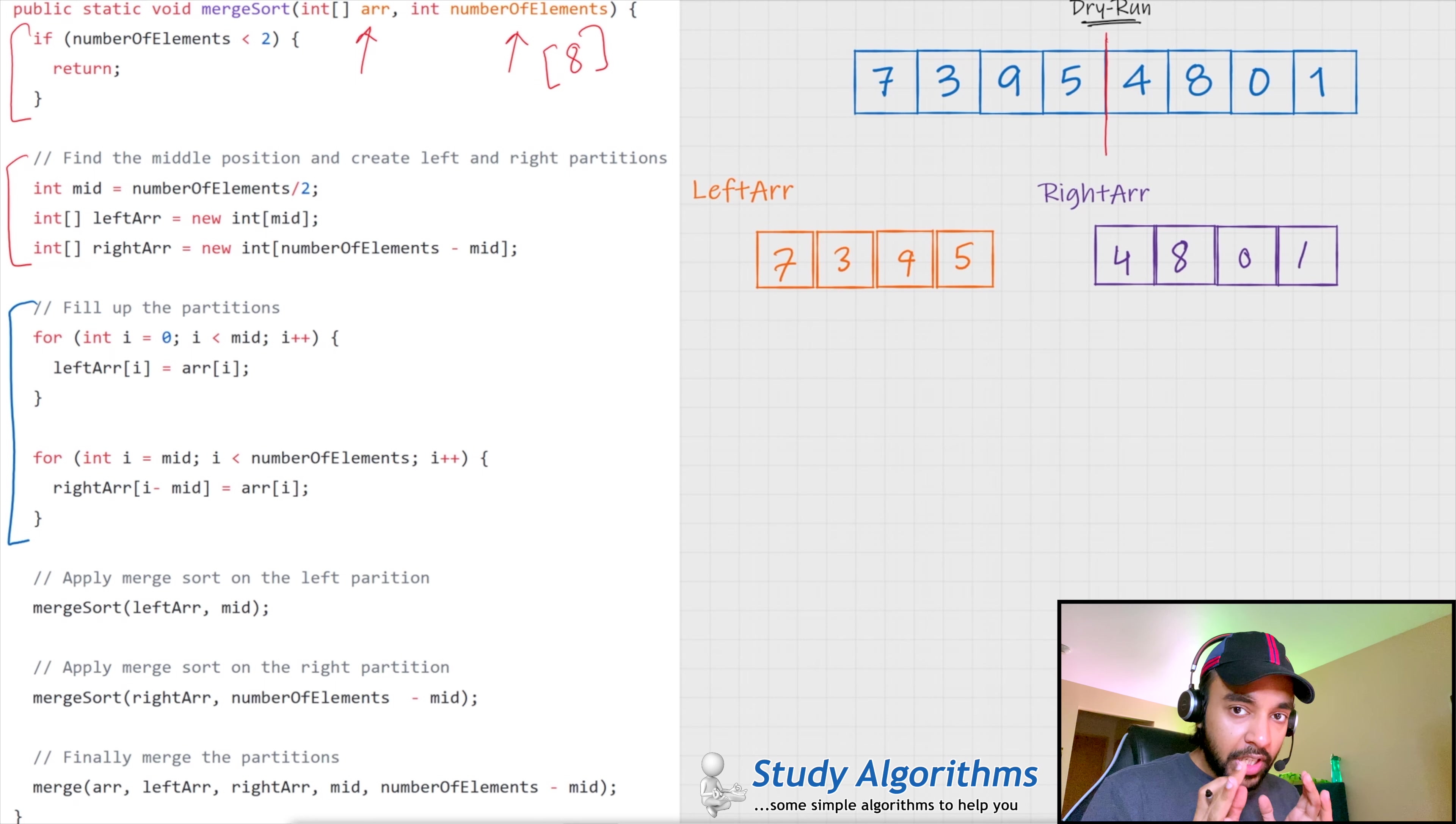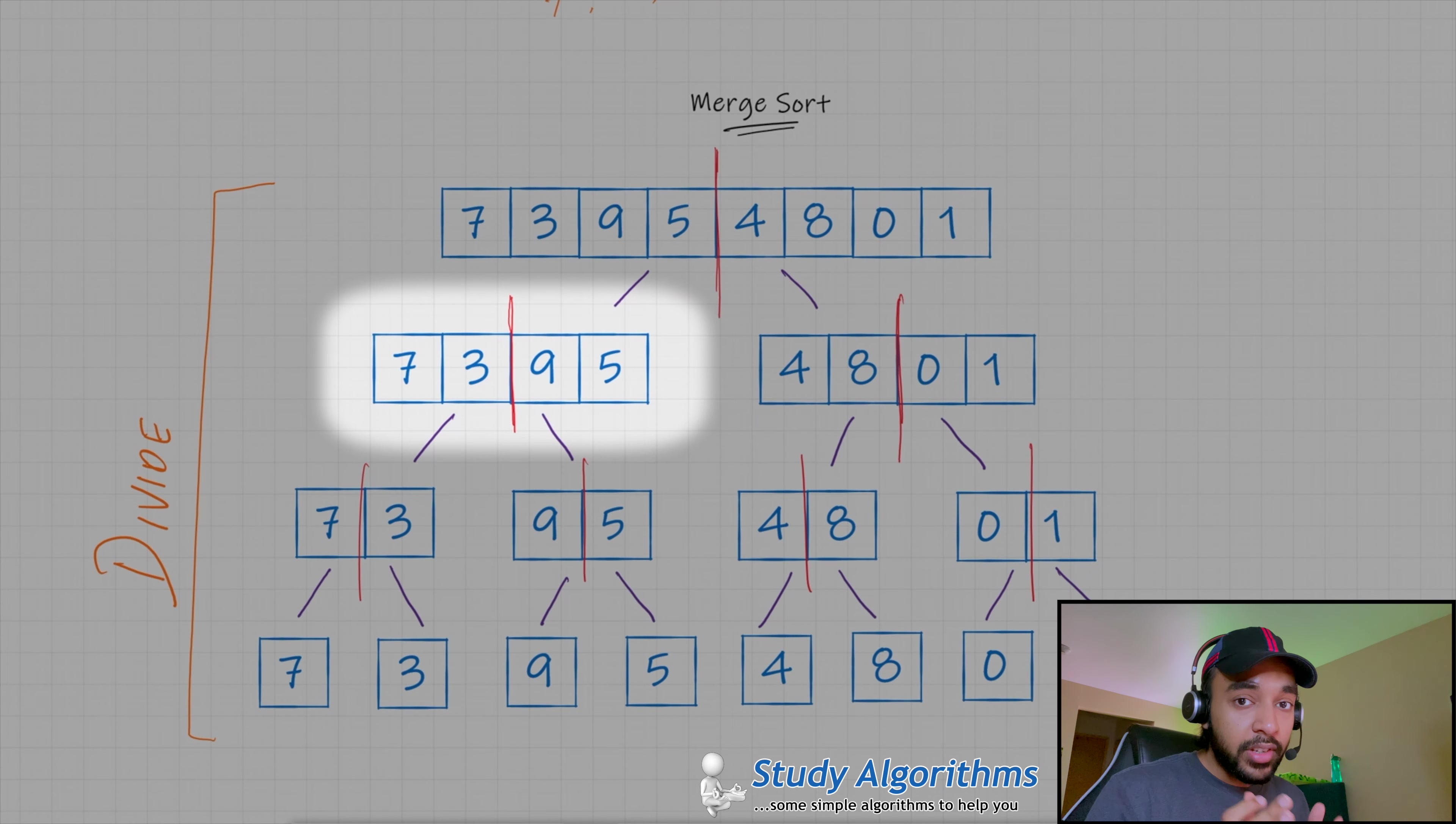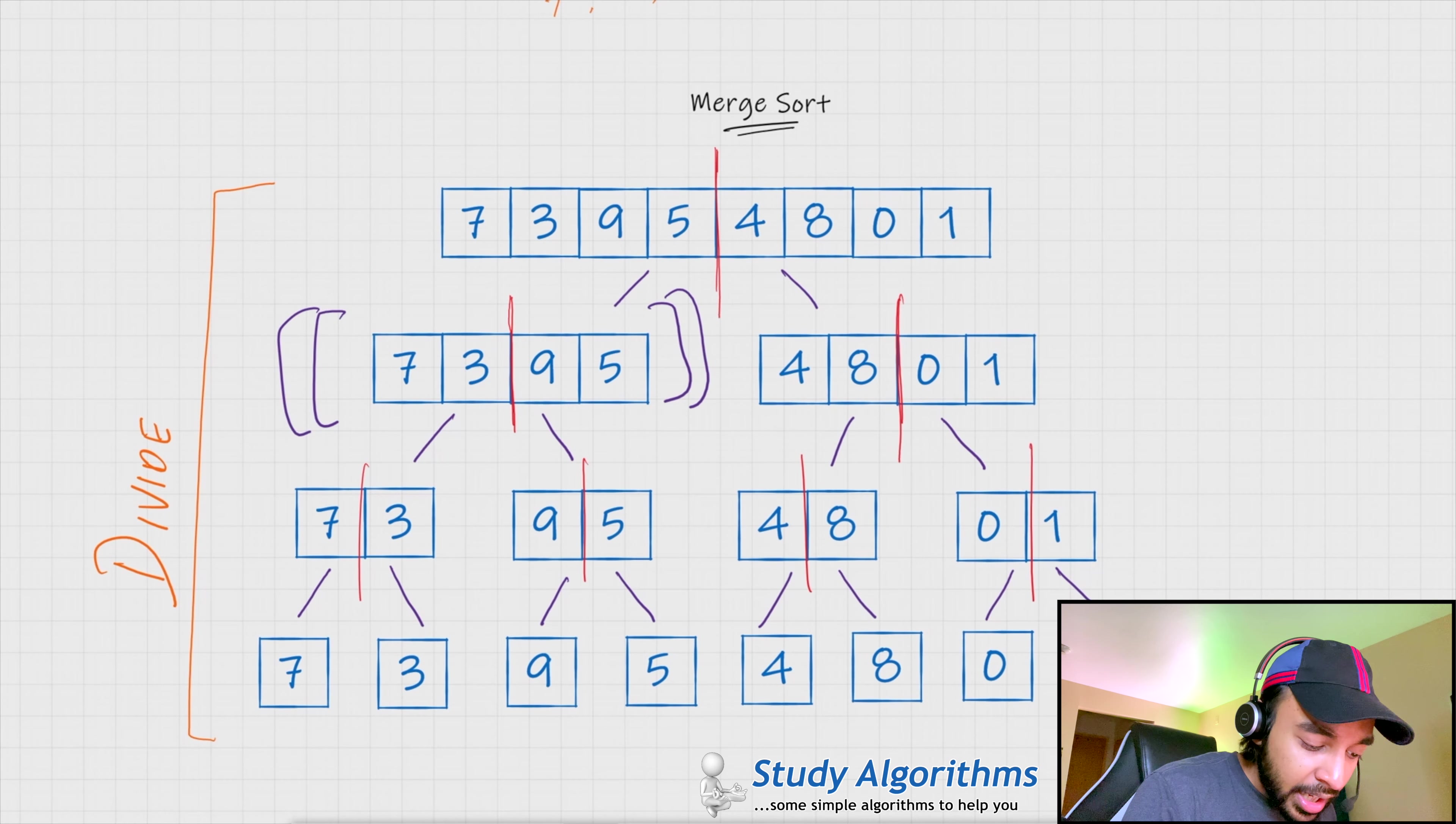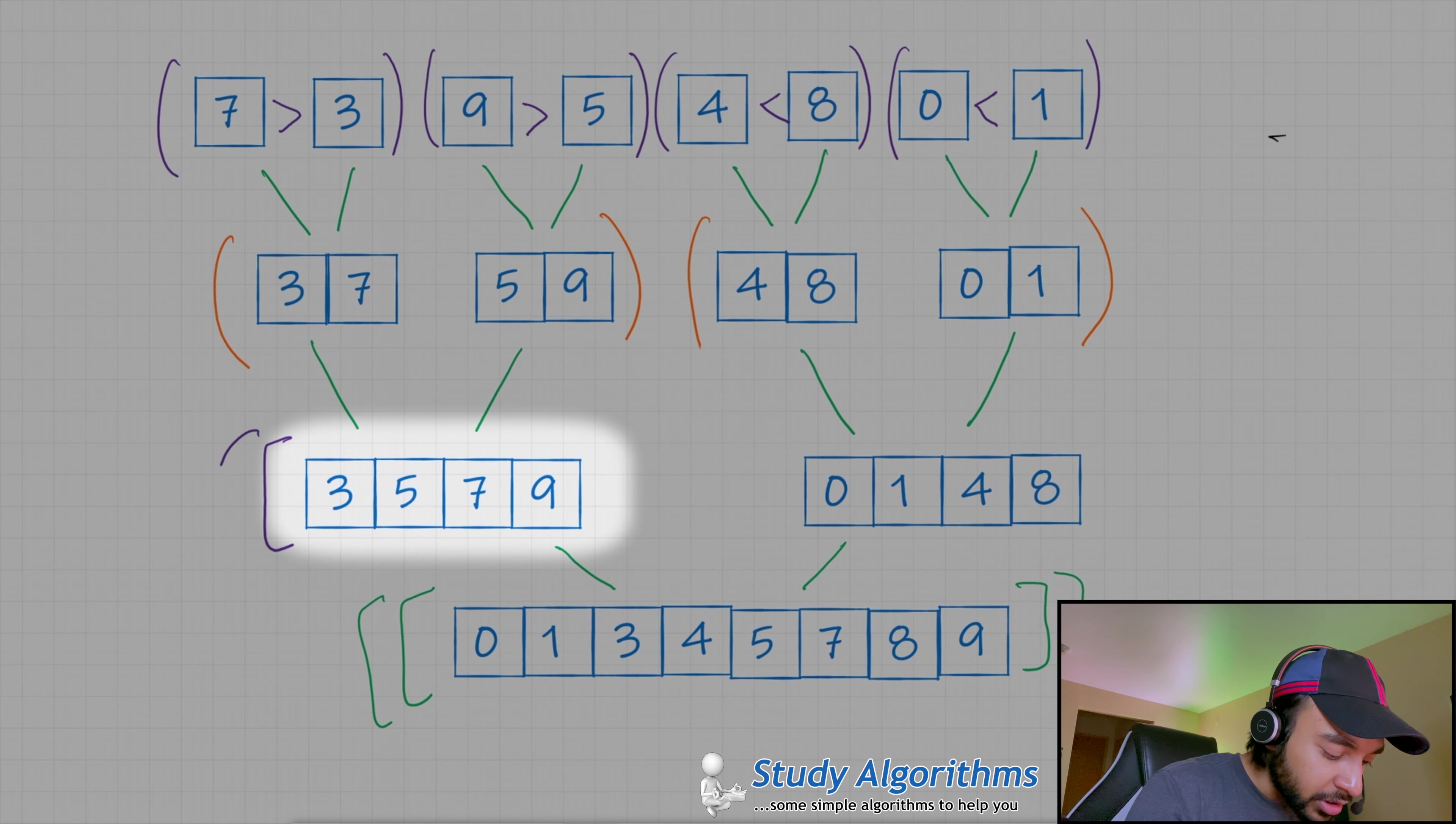Now, pause here for a while. So, if you remember from our previous example. Now, this array 7, 3, 9, 5 is a small problem in itself, right? So, if I apply merge sort just on this array, then I should be able to get the solution for this, right? And, if you see, after a while, when we were conquering all of our steps, we actually got the solution to that mini problem, right? And, this was the solution.